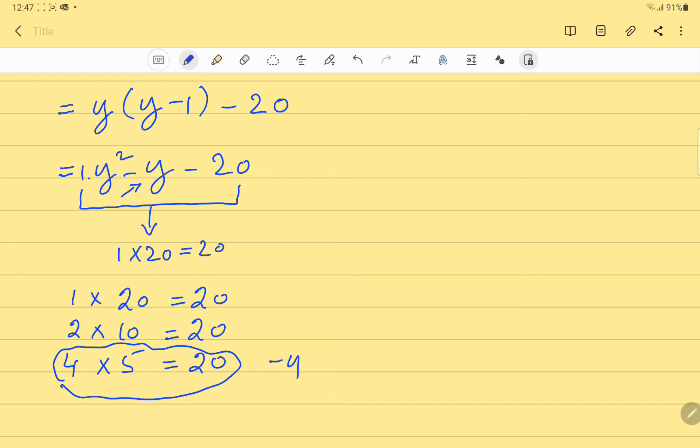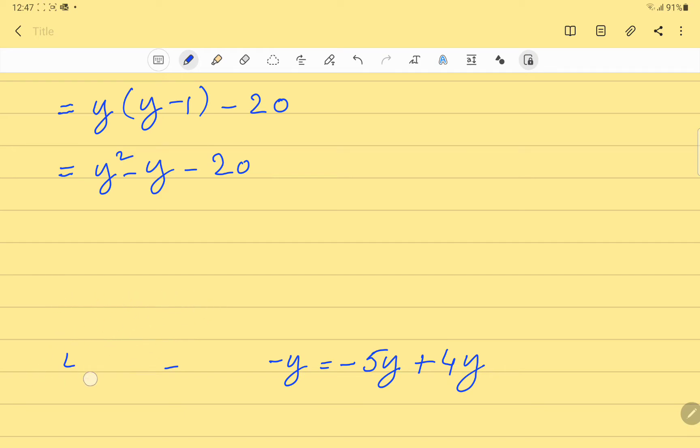So, instead of minus y we can write minus 5y plus 4y. So, let's substitute it in the given expression. y squared minus 5y plus 4y minus 20.